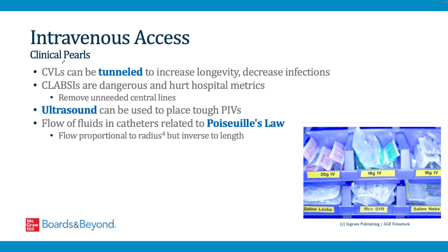Here are some clinical pearls about central lines. Central venous lines can be tunneled to increase longevity and decrease infection risk, usually performed by interventional radiology. CLABSIs are very dangerous and iatrogenic, hurting hospital metrics — so remove unnecessary lines. Ultrasound can be used to place difficult IVs. Importantly, flow in catheters follows Poiseuille's law: flow is proportional to the radius to the fourth power but inverse to length. This means a triple lumen catheter can actually deliver fluids more slowly than a 16-gauge IV, so large-bore IVs are preferred for rapid fluid administration in cases like GI bleeds.